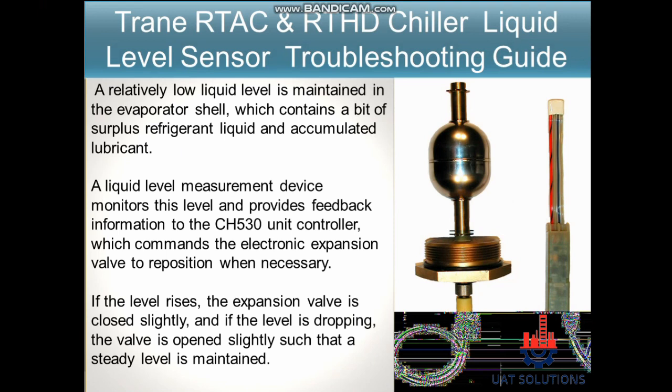A relatively low liquid level is maintained in the evaporator shell, which contains a bit of surplus refrigerant liquid and accumulated lubricant. A liquid level measurement device monitors this level and provides feedback information to the CH530 unit controller, which commands the electronic expansion valve to reposition when necessary.